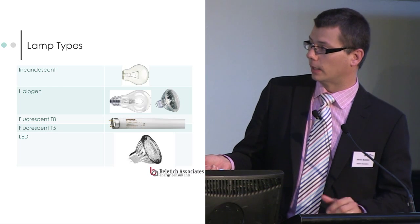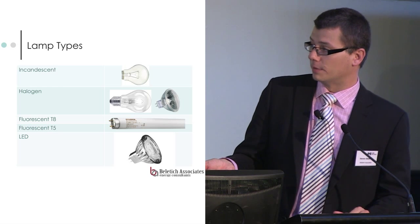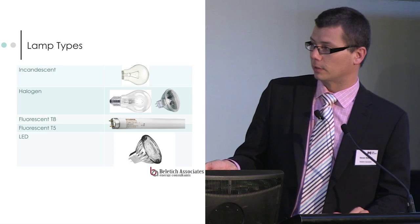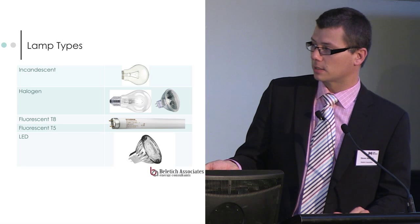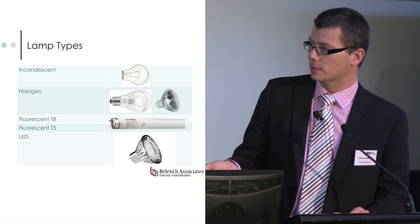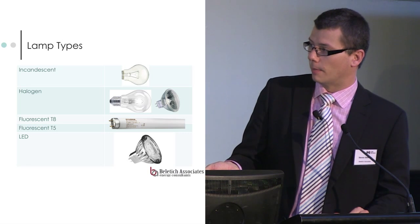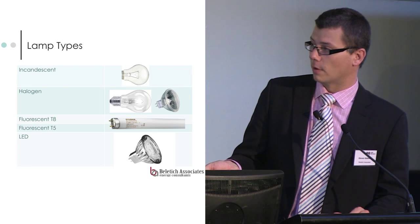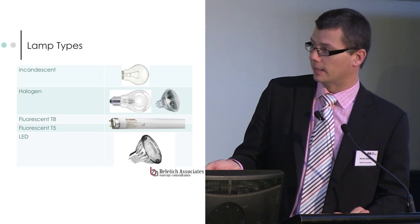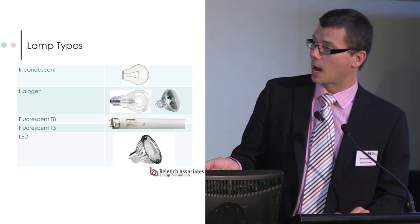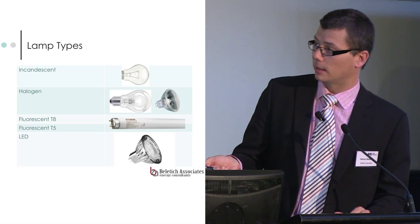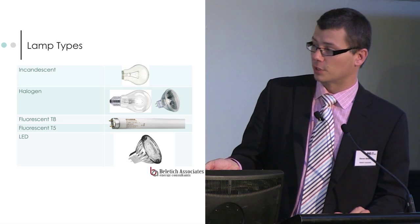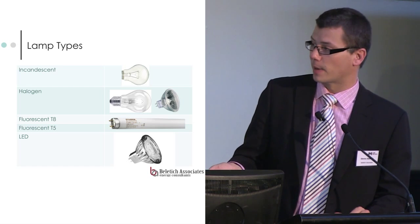They now come in — obviously you're all used to these little halogen downlights, the 12 volt ones. This is a 240 volt version of the old incandescent that's come into the market to replace that incandescent. It uses about 30% less power.